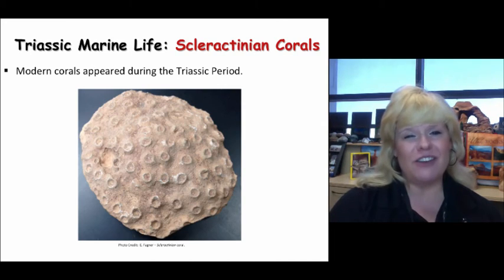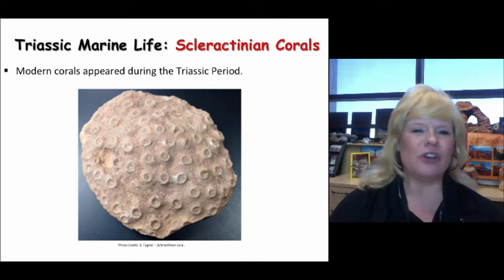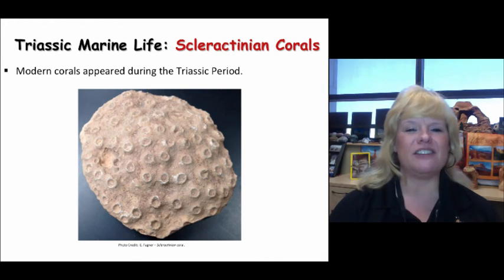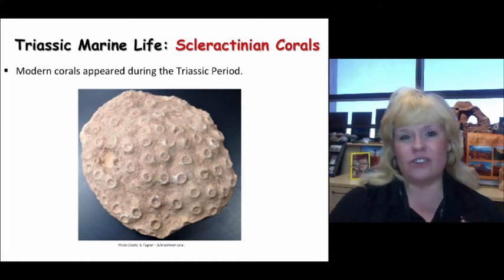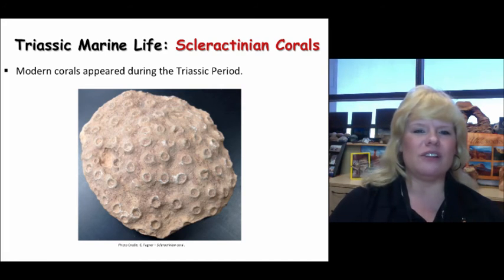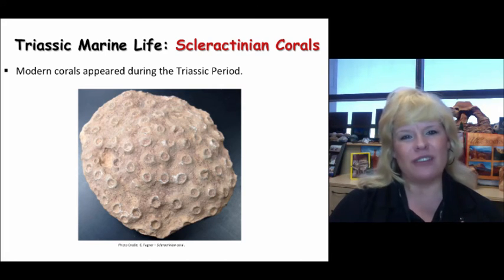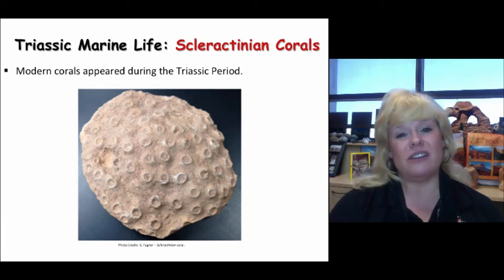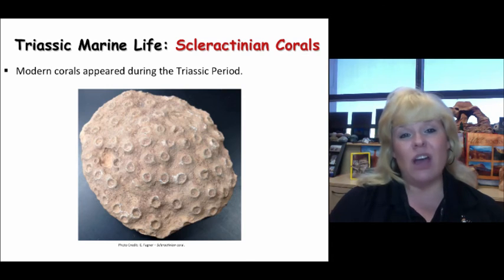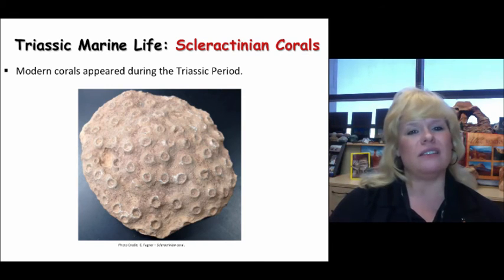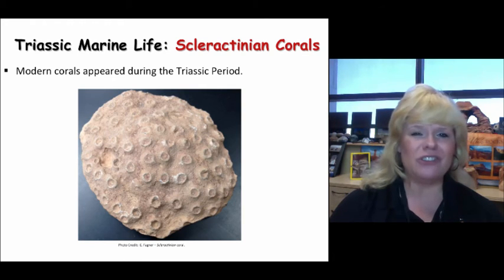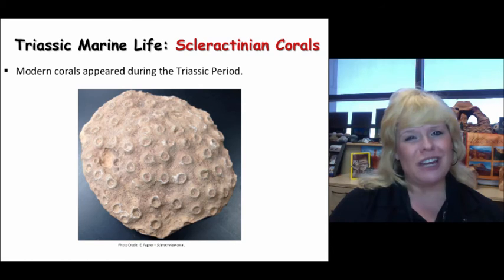One very important life form to evolve in the ocean is Scleractinian corals. These are going to replace the rugosa and tabulate corals that went extinct at the end of the Permian mass extinction event. Modern-day corals are just versions of Scleractinian corals — they've been around for several hundred million years and continue to thrive in the ocean at the right latitudes.